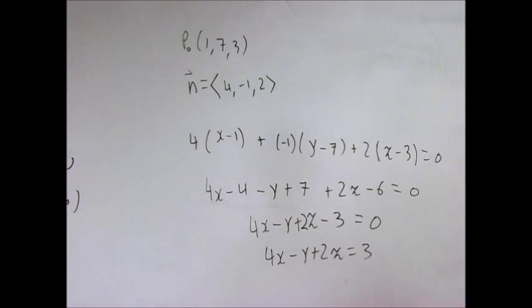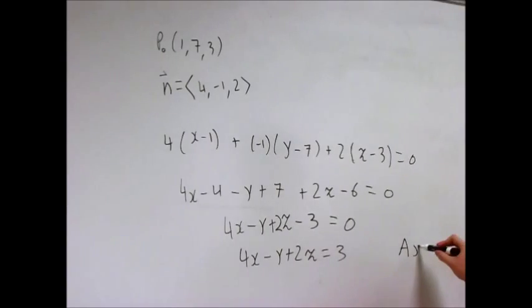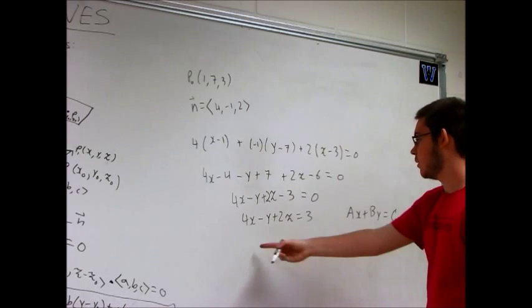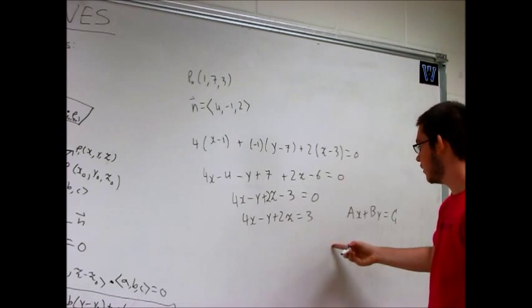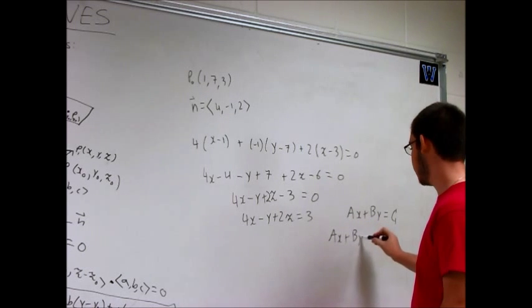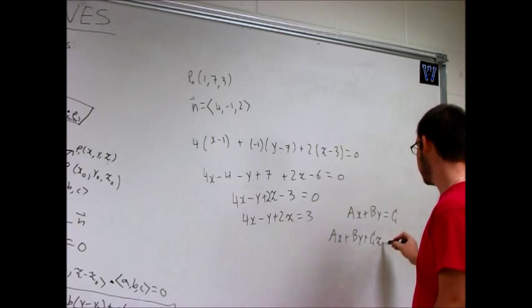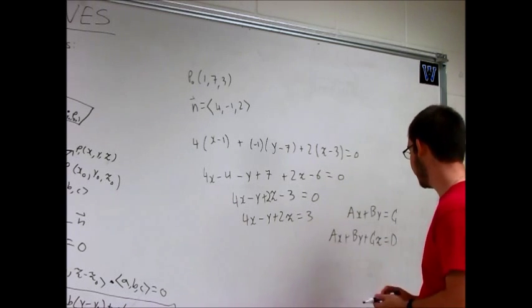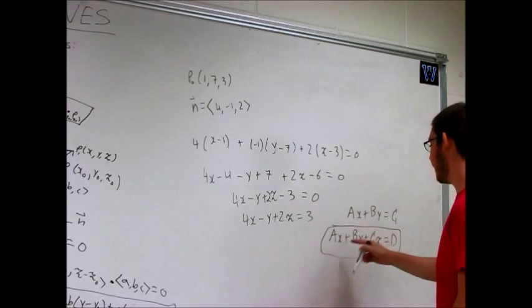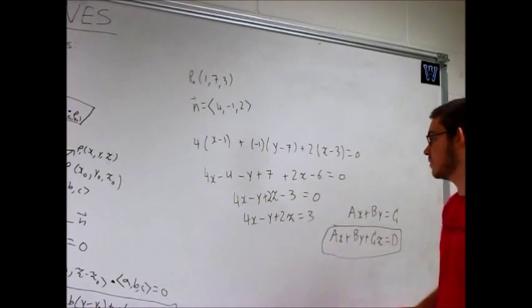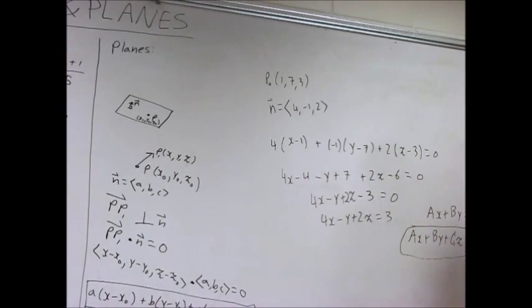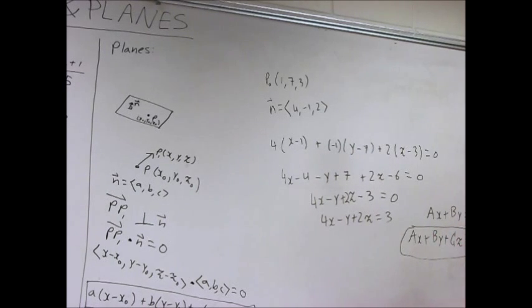So just like with a line in two dimensions, you have the general form, ax plus by equals c. For a plane in three dimensions, you have ax plus by plus cz equals d. That's a general form as well. So another form. And a, b, and c are also a, b, and c from the normal vector. And d sort of corresponds to a displacement from the origin.